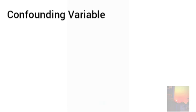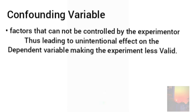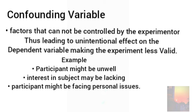The second type of variables are confounding variables. Confounding variables are factors which are beyond the control of an experimenter. As it is a factor which cannot be controlled by the experimenter, the confounding variable can have some unintentional effects on the dependent variable.